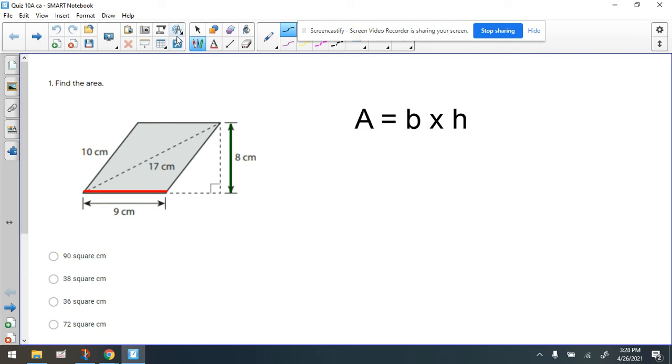So if we use this red number as being the base, we have to find a number that's perpendicular to it. So if you look at this, that's not perpendicular, right? That would form an acute angle. That number is not. That forms an acute angle.